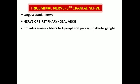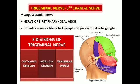The trigeminal nerve is the fifth cranial nerve and shows unique features among all other cranial nerves. It is the largest cranial nerve and is the nerve of the first branchial arch. It provides sensory fibers to four peripheral parasympathetic ganglia: the otic ganglion, pterygopalatine ganglion, ciliary ganglion, and submandibular ganglion. It is called the trigeminal nerve because it has three divisions: ophthalmic, maxillary, and mandibular.